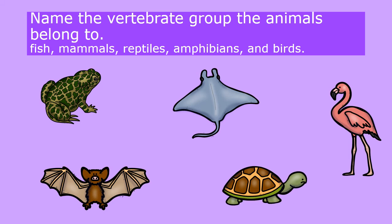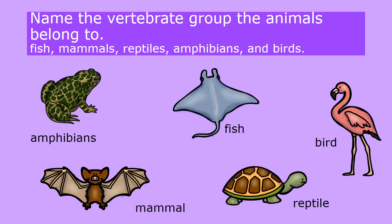Now that we've learned about vertebrates and invertebrates, we are going to name the vertebrate group each animal belongs to. The vertebrate groups, as we recall, are the fish, the mammals, reptiles, amphibians, and birds. Pause the video and identify which group the animals on the slide represent. The flamingo belongs in the bird group. The stingray belongs in the fish group. The toad belongs in the amphibian group. The turtle belongs in the reptile group. And the bat belongs in the mammal group. Great job!